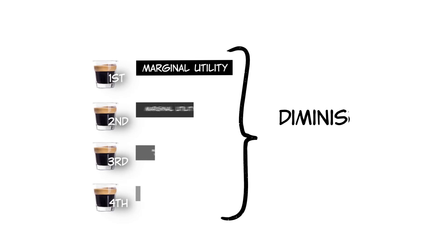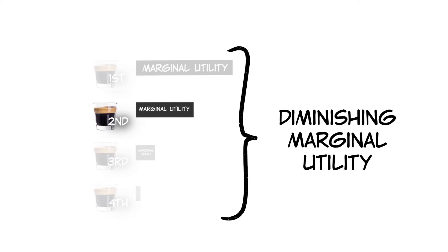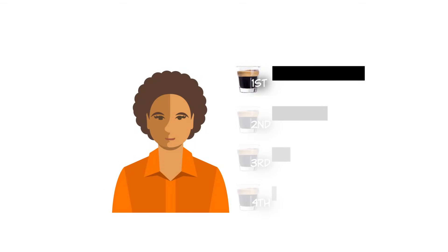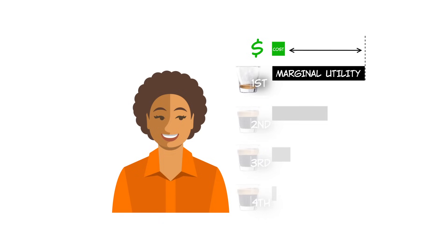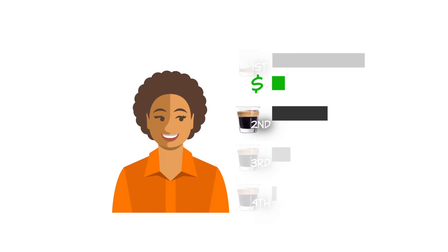Goods have diminishing marginal utility. Each additional good brings less utility, less satisfaction than the previous one. Think of how awesome that first espresso is first thing in the morning. When you compare the marginal utility of that first espresso with the price, it's a no-brainer — you get it. Put another way, the benefits of the espresso exceed the cost. The second one is maybe okay, and gives you enough utility to be worth the price, so you buy it.